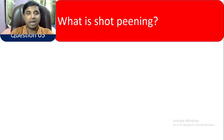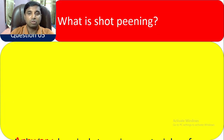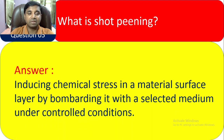Question 5: What is shot peening? Shot peening is inducing chemical stress in a material surface layer by bombarding it with a selected medium under controlled conditions.